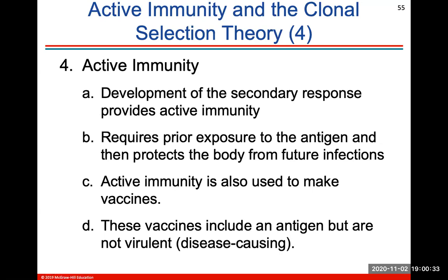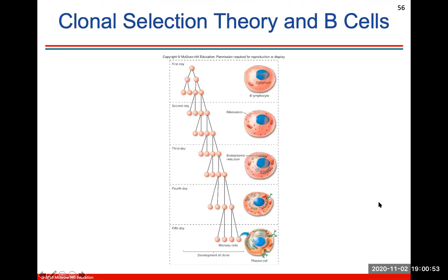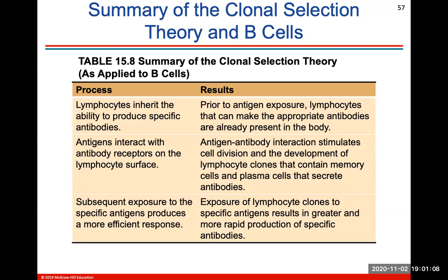Active immunity is the development of a secondary response that provides active immunity. It requires prior exposure to the antigen, which will then protect the body from future infections. Active immunity is what we use to make vaccines, and these vaccines include an antigen but are not virulent — they're not disease-causing. This shows clonal selection and how memory cells are formed from day one to day five with the B cell.